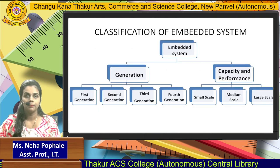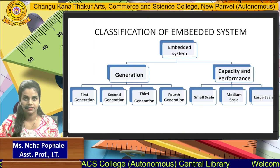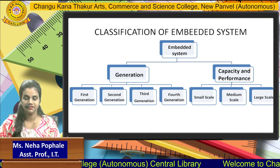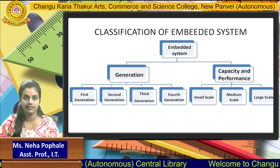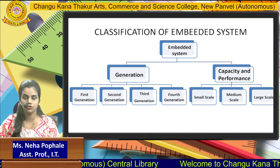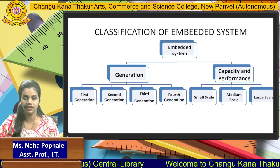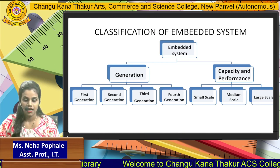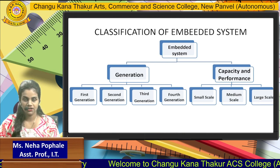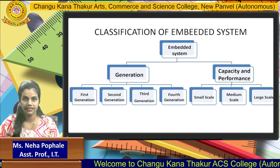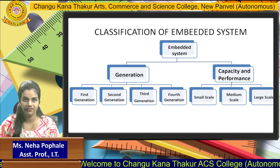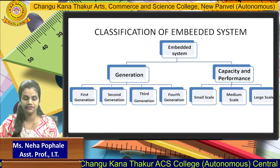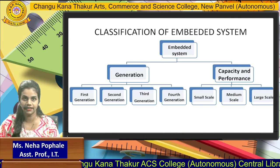Now, for the classification of Embedded Systems — Embedded Systems are classified into two groups: based on generation, and based on capacity and performance. Based on generation, they are further classified into four generations: first, second, third, and fourth.